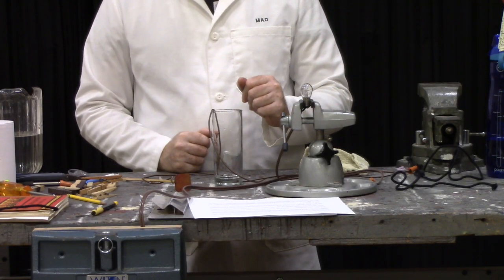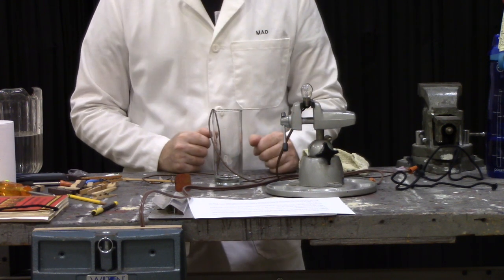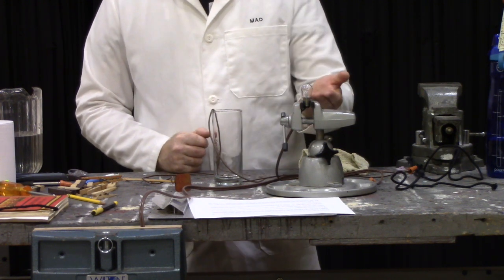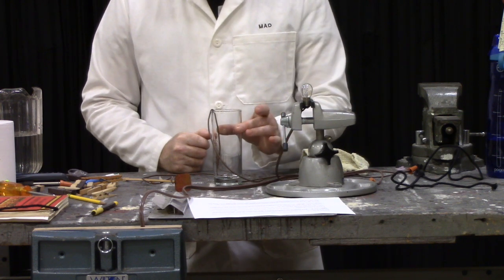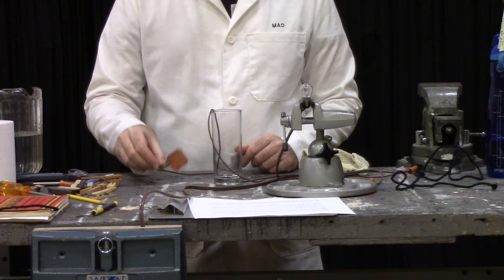Alright, let's do the demonstration. I've plugged my transformer in about 20 feet that way, and then run zip cord over to the bench to keep the high voltage away from the water. I have my 12 volt lamp. It's an automotive brake light. I have a glass which has my fixed electrode in it, and I have my moving electrode here.